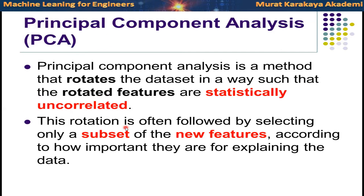Principal Component Analysis is a very simple method but requires a lot of mathematics. The idea is to rotate the axes such that the rotated features are statistically uncorrelated with each other. Why do we need this? If there are many features that are correlated with each other, by using these features we cannot decide the target easily.